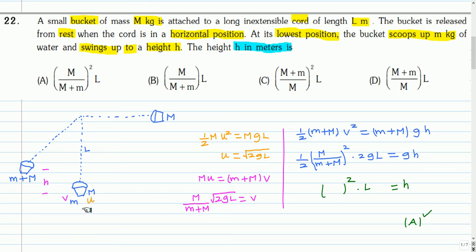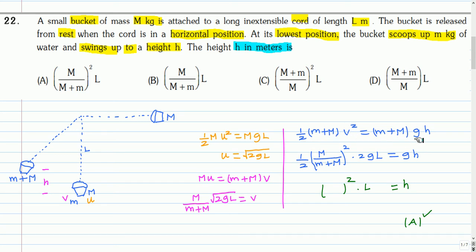The bucket hitting and picking up water is like a collision, so we apply conservation of momentum. The initial momentum before collision is m·u and the final momentum is (m + m)·V. With u = √(2gL), we get V = m/(m + m) · √(2gL). Then applying energy conservation as the bucket swings up to height H: half(m + m)V² = (m + m)gH. From this we get H = [m/(m + m)]² · L. So the correct option is option E.